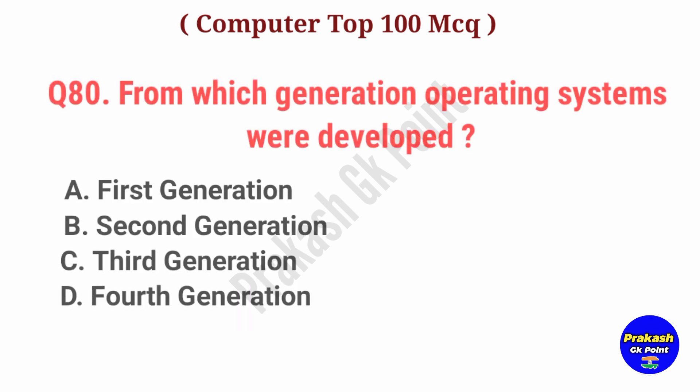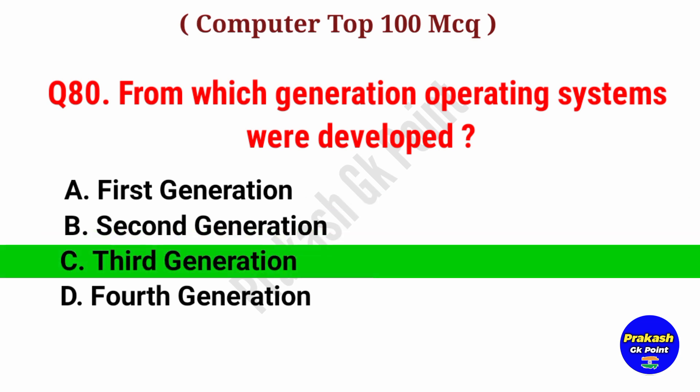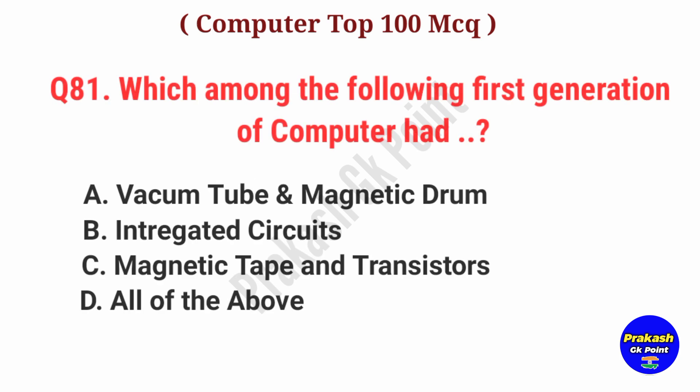From which generation were operating systems developed? Answer: Option C, Third Generation.